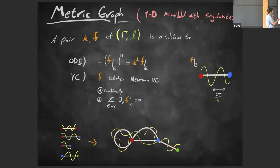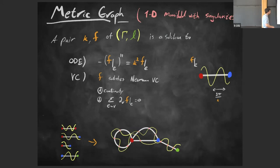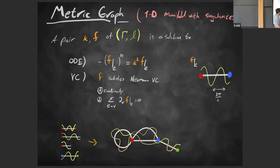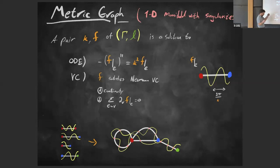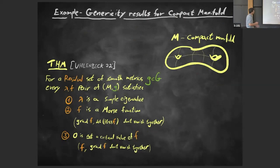By a pair of eigenvalue k and eigenfunction f of (γ, l), I mean a solution to the ODE on each edge — that's minus the second derivative, the Laplacian, equal to k² f — together with vertex conditions, the analog of boundary conditions. I'll talk about the Neumann vertex conditions: all functions from all edges agree on value at each vertex (continuity), and the sum of incoming derivatives vanishes.